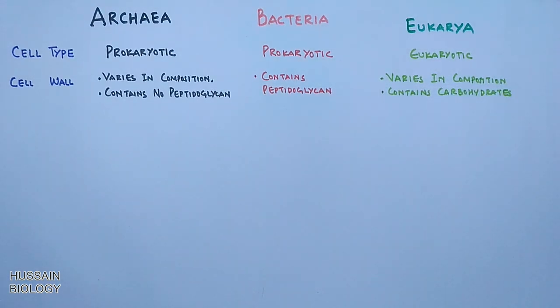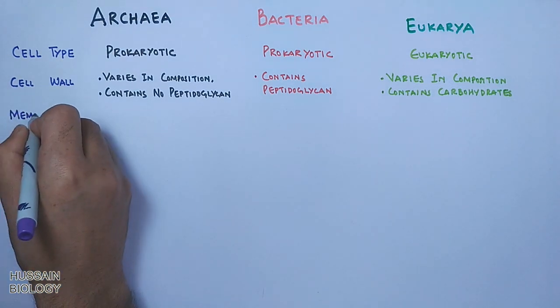So the main difference in all three domains is the presence of peptidoglycan — it is present in Bacteria but absent in both Archaea and Eukarya.